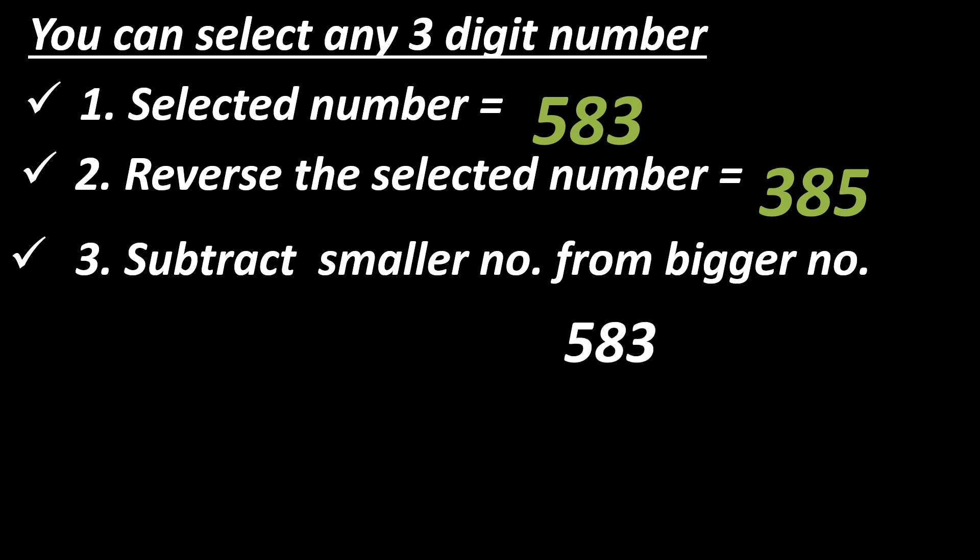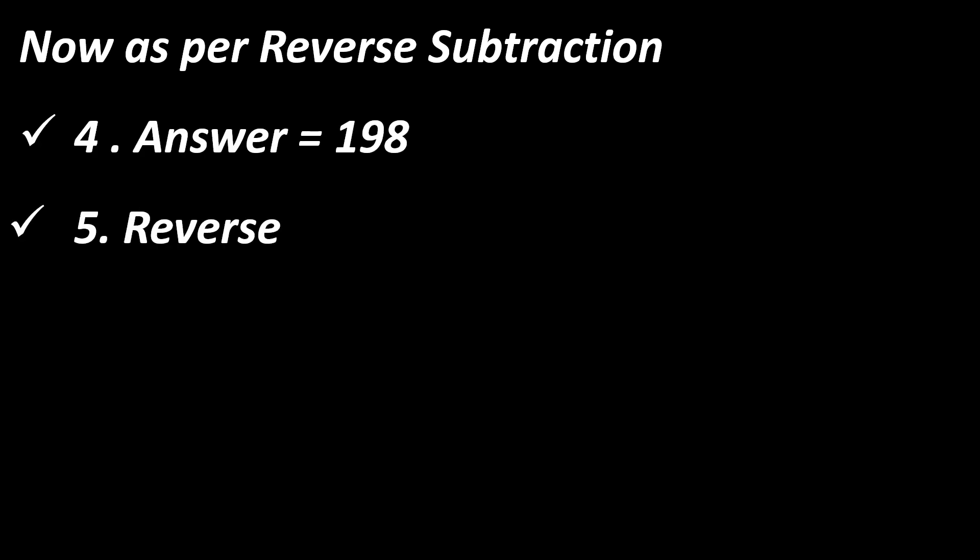So bigger number 583 minus smaller number 385 will give us the answer 198. Here, reverse subtraction gave us the answer 198. Now, as per reverse subtraction, our answer was 198 right? This answer we have to reverse again, so we will get 891.